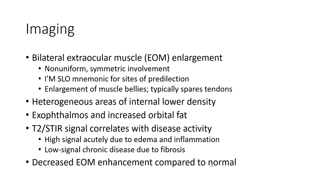T2 signal intensity correlates with disease activity. High signal is typically due to edema and active inflammation. Low signal in chronic disease is due to fibrosis. Decreased extraocular muscle enhancement is seen in the chronic inactive phase.